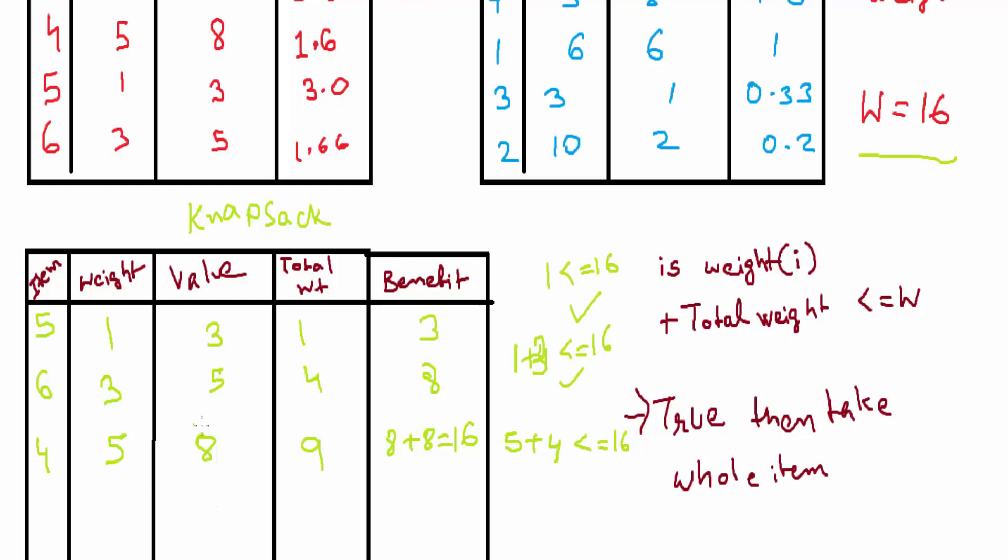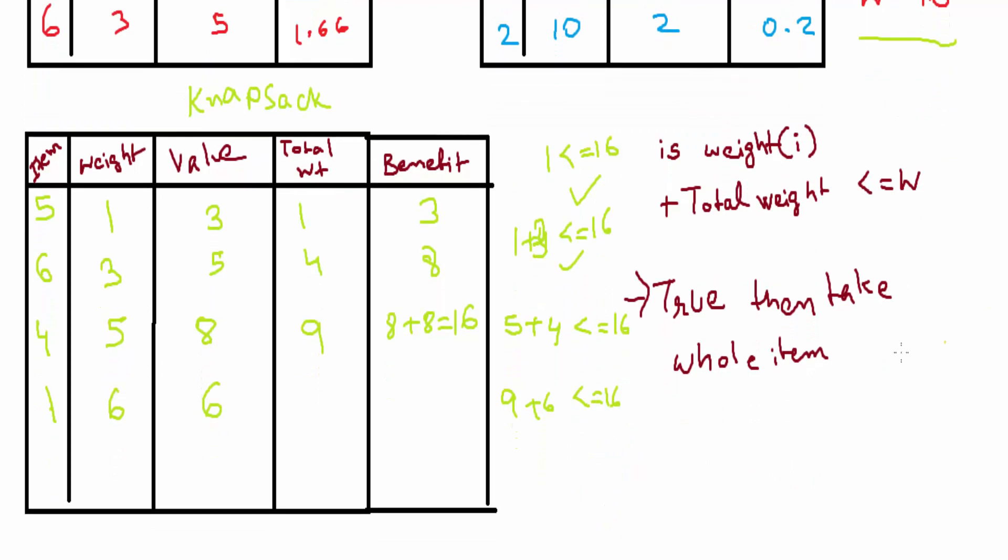Now we'll take item number 1. Its weight is 6, its value is also 6. Let us see the total weight. 9 plus 6, that is less than or equal to 16. Because 15 is less than or equal to 16, we'll take the whole item. This will be 15, and this will be 16 plus 6, that equals 22.